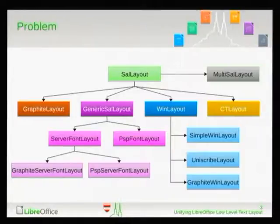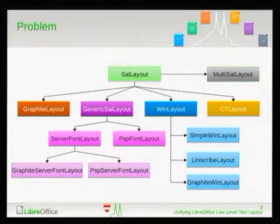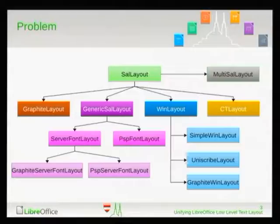On Windows, we have SimpleOneLayout for so-called simple scripts — English, Greek, Cyrillic, stuff like that. And we have Uniscribe, which is for complex scripts: Arabic, Devanagari, Thai. And we also have graphite layout for Windows.